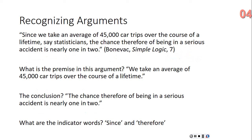The premise is 'we take an average of 45,000 car trips over the course of a lifetime.' The conclusion is 'the chance of being in a serious accident is nearly one in two' — note that the word 'therefore' should not be included as part of the conclusion, as it is an indicator word. The indicator words are 'since' and 'therefore': 'since' indicates the premise, 'therefore' indicates the conclusion.